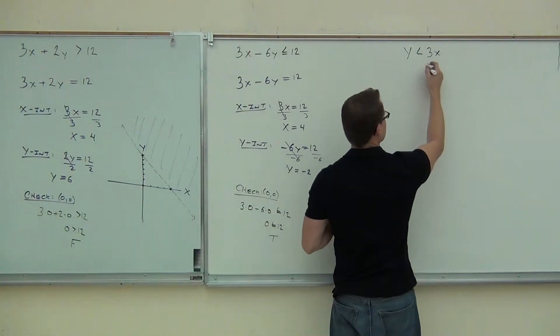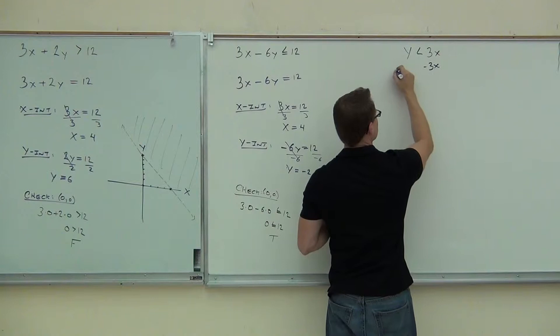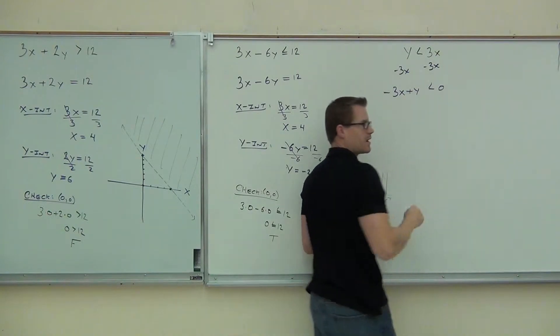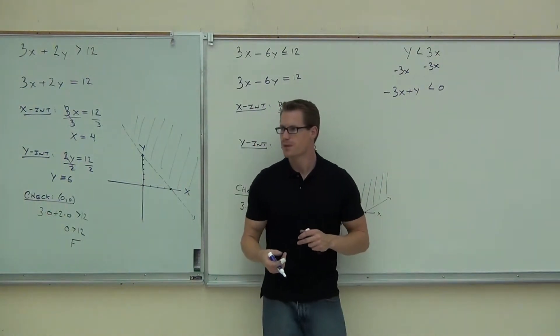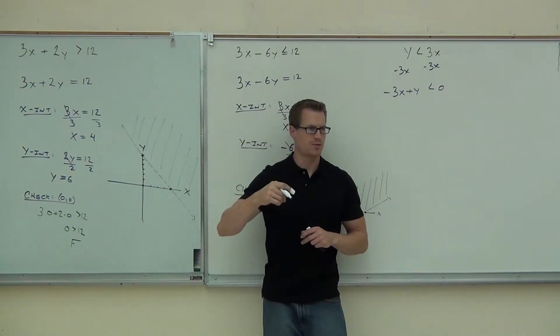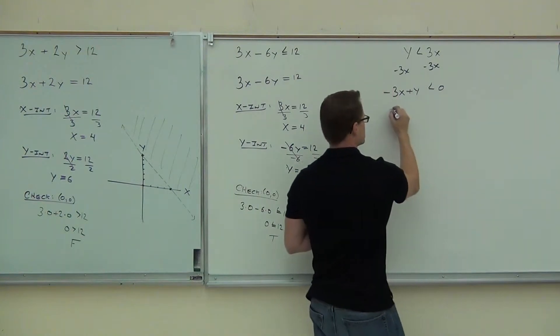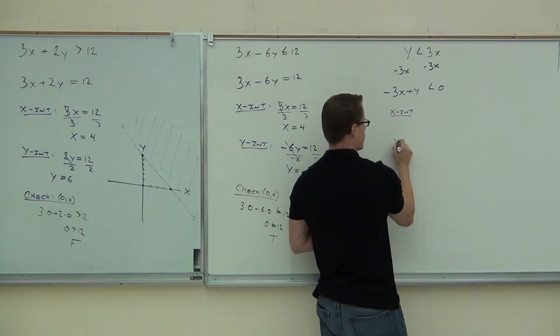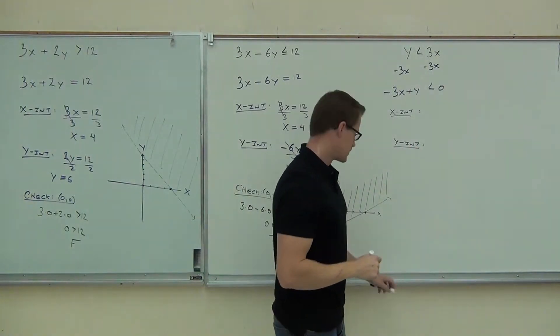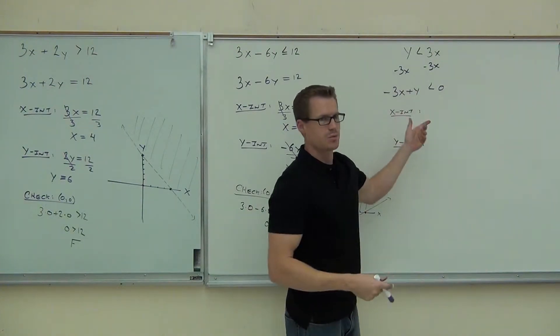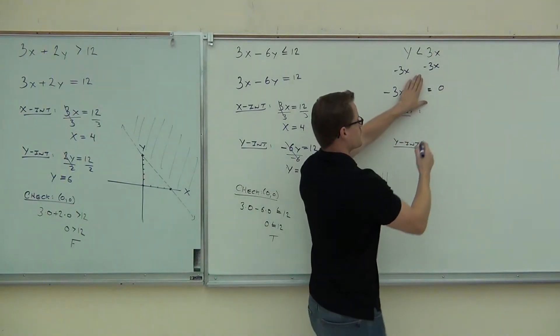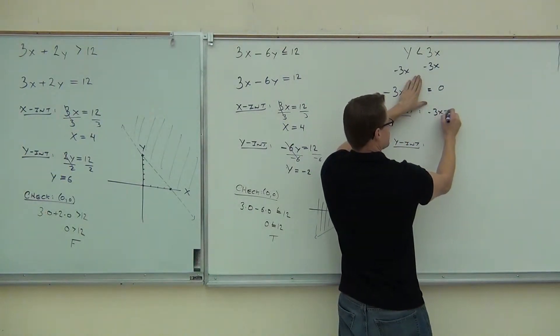If I subtract 3x, I get negative 3x plus y is less than 0. I am writing it that way because that is standard form. Do you guys see the standard form? Now let's try to do this method with that problem. You ready for it? Here is what you do. You write x-intercept. You write y-intercept. In order to get the x-intercept, you would cover up the y. You set it equal. You would cover up the y and you would get negative 3x equals 0.